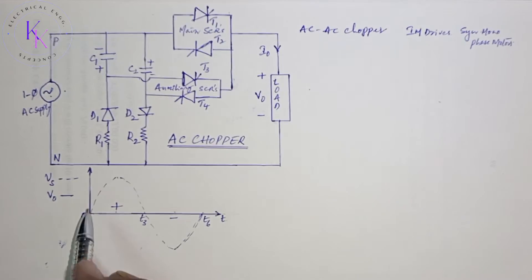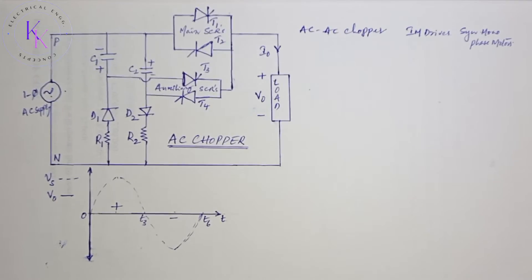This is our AC supply with the dotted lines, and I divided this AC supply into positive and negative half cycles. Zero to T3 is positive half cycle, T3 to T6 is negative half cycle. Now let us see the working of the AC chopper.